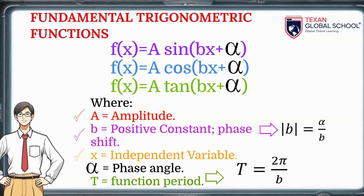The period of the function is the minimum length of the interval in which the pattern of the function repeats. You get it as 2π over B, or simply by subtracting the endpoint minus the initial point. Any part of the graph that shows that pattern is called a cycle.